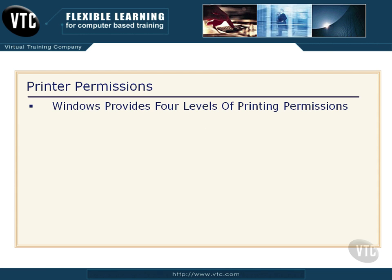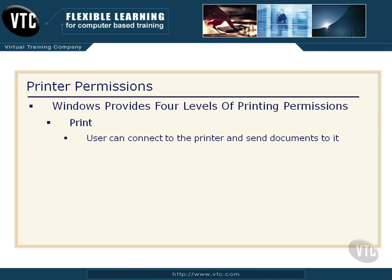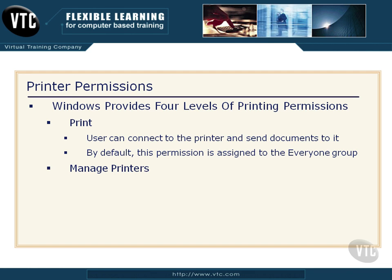Windows provides four levels of printing permissions. The first one is called Print. If you have the Print permission, you can connect to the printer, send documents to it, and if the printer is functioning and has paper, prints will come out. By default, this permission is assigned to the everyone group when that logical printer is installed.